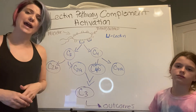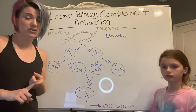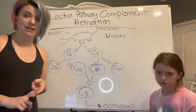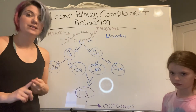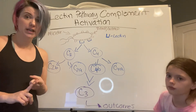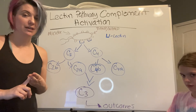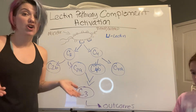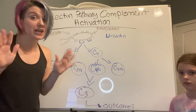So the three complement activation types that we talked about were classical, alternative, and lectin. Classical involved antibodies and the C1 protein. Alternative involved the B, D, and P proteins. And the lectin pathway involves lectin. So we'll see you guys in the outcomes video.